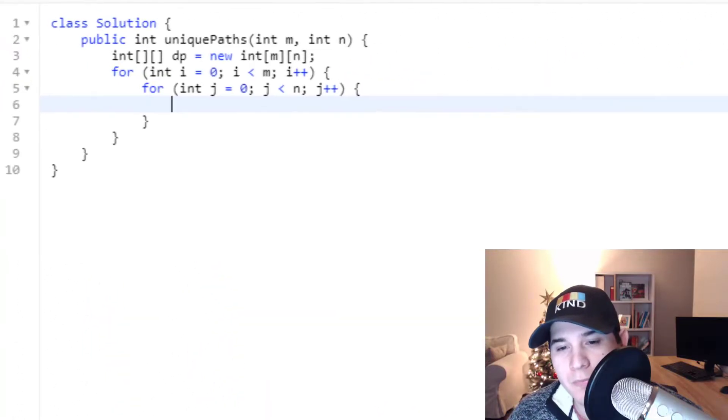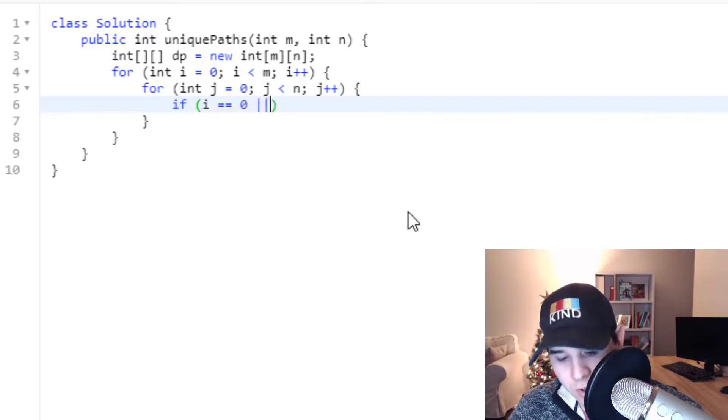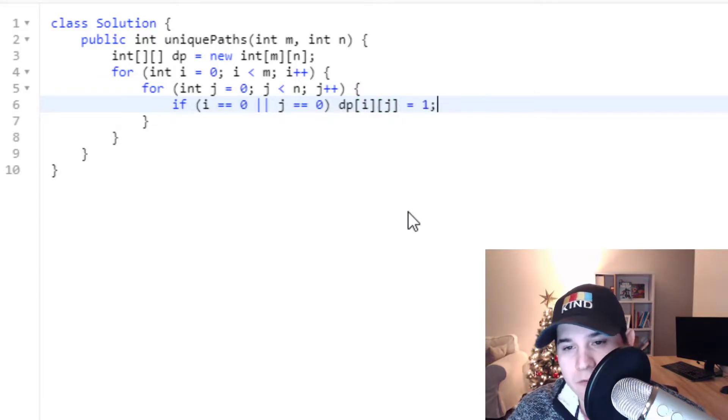So we can say if i is equal to zero or j is equal to zero then we need to set this current index to one right.